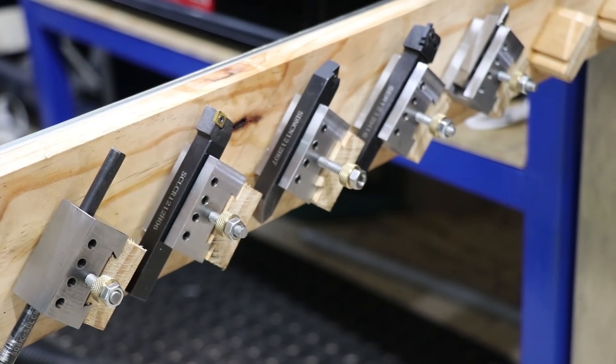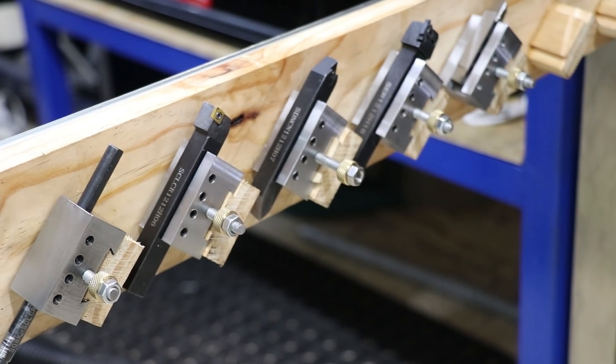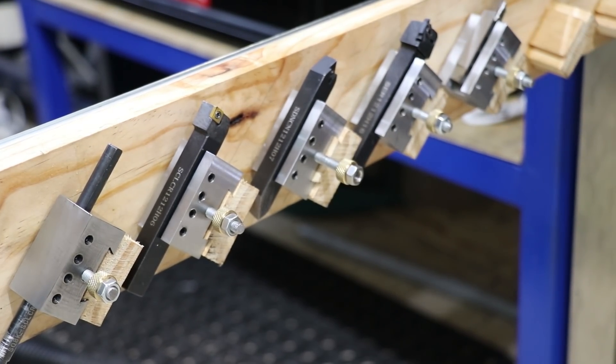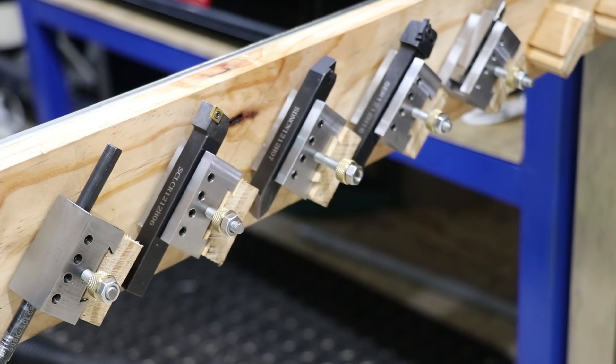And that's the tool holders done. A light coating of a rust protector will keep them free from rust, or if you really want to, you can blue them. Personally, I prefer the shiny fly cut finish, so I'm going to leave them like this for the moment.